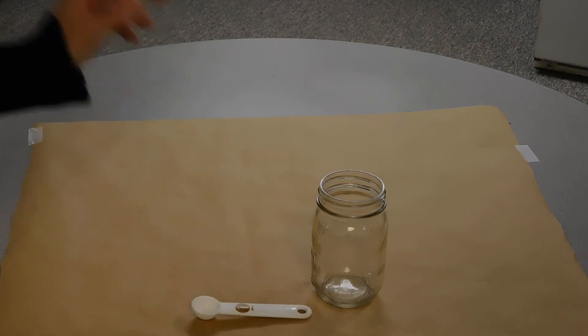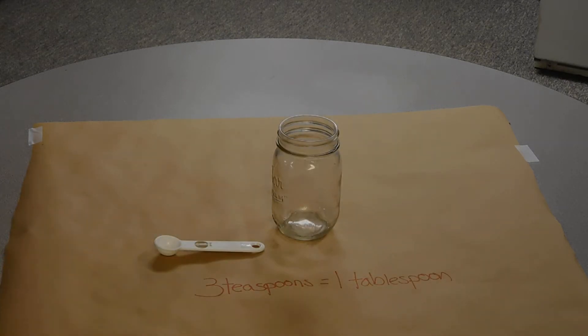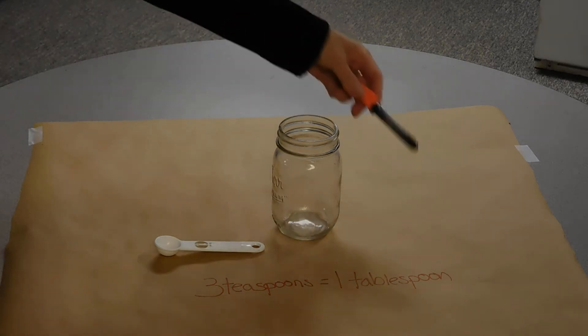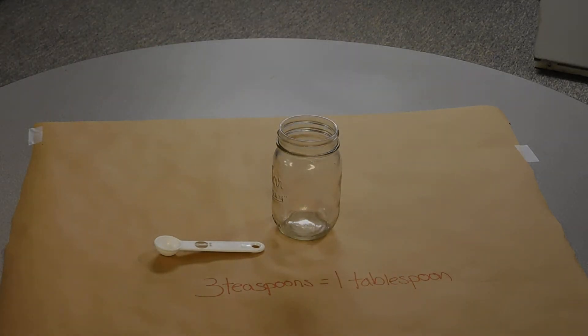The equipment that we're going to use is a jar and a measuring spoon. The recipe calls for a tablespoon measure, and all I have is a teaspoon measure here, but luckily we know that three teaspoons equal one tablespoon. So we'll just measure three times for every one tablespoon we want to use.